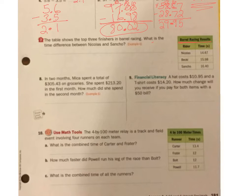Difference, that's a subtraction. Between Nicolas and Sancho. Here's Nicolas: 14.67. And Sancho is 16.4. Now if I want to find the difference with them, I'm going to subtract, and I'm going to put the bigger one on top. So I go with 16.40 minus Nicolas, which is 14.67. And when I do that, it'll find me the difference between the two.